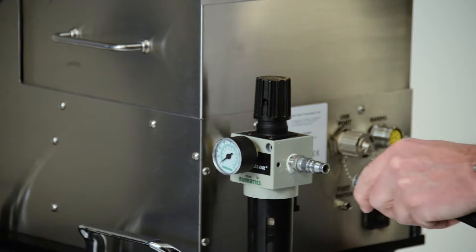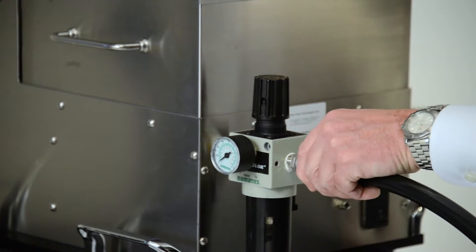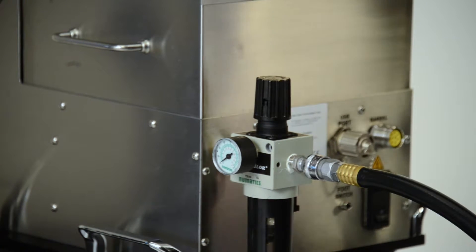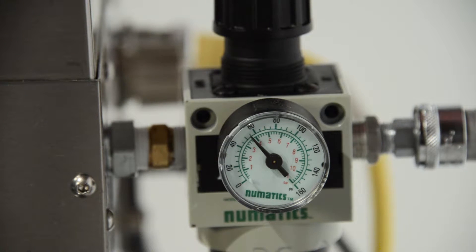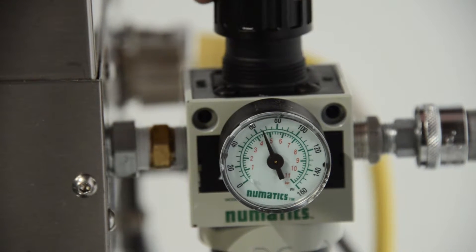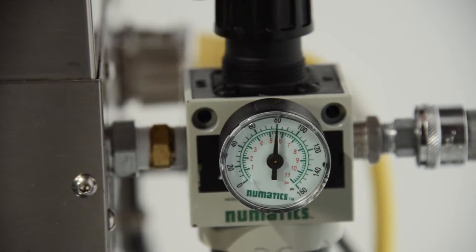Begin setting up the carousel autoloader by connecting a half-inch airline to the quick disconnect coupling on the back of the unit. Adjust the filter regulator to 80 PSI or 5.5 bar.